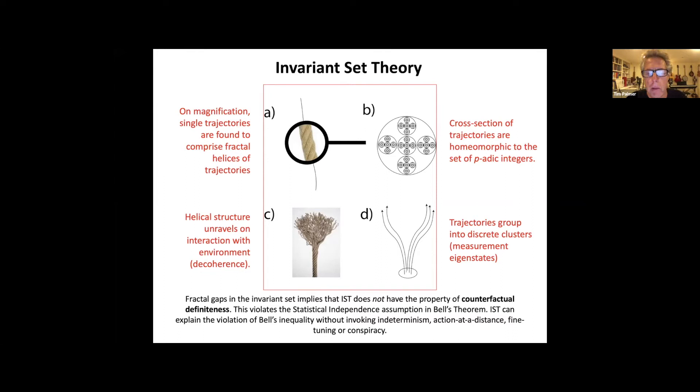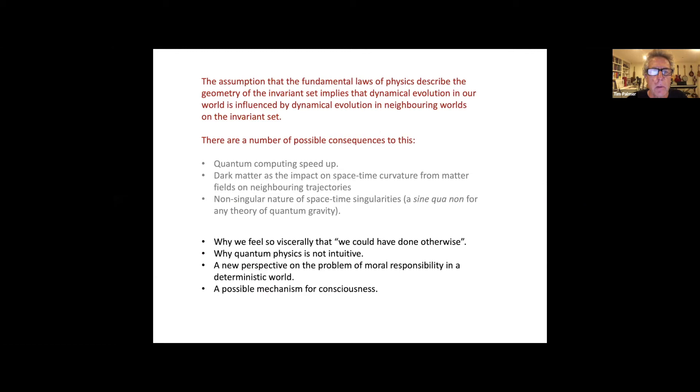This is a very important point when it comes to looking at Bell's theorem and non-locality in particular. Once you do not have the property of counterfactual definiteness, which is to say that all putative states could be potential states of your theory, then you can violate the statistical independence assumption in Bell's theorem. You can do this without actually having to invoke fine tuning or conspiracy or indeterminism or action at a distance.